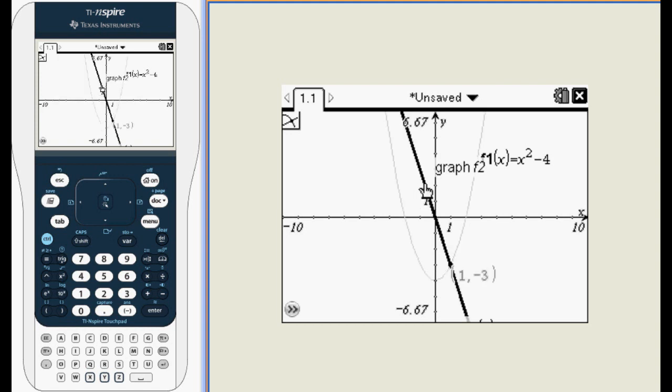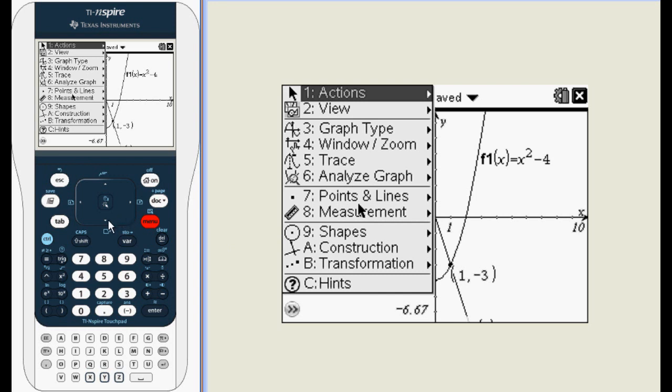Even though the Inspire finds all the intersection points simultaneously, those intersection points do need to be on the screen to be displayed. Since only one of our intersection points is currently on the screen, go to menu and select window zoom.